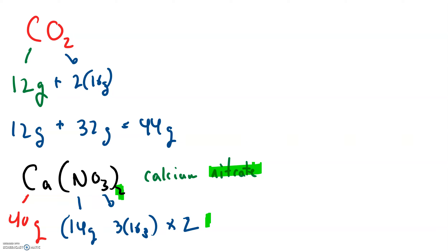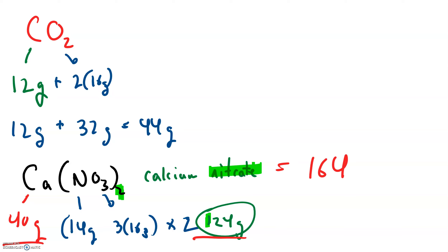We multiply the nitrate mass of 62 by 2, giving us 124 grams for both nitrates combined. So the molar mass of calcium nitrate is 124 plus 40 — that's 164 grams. And that is all you do.